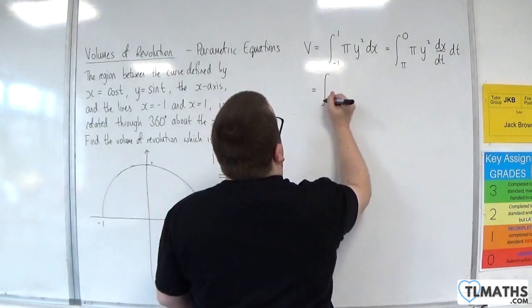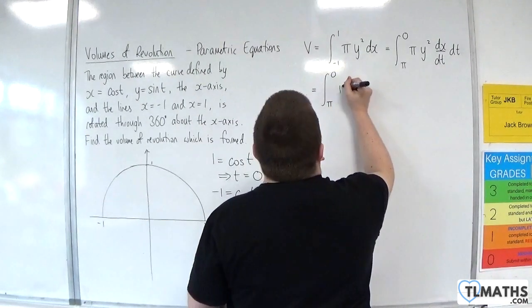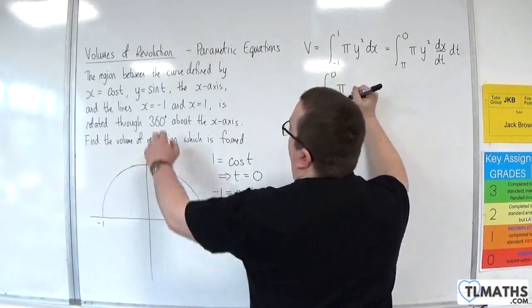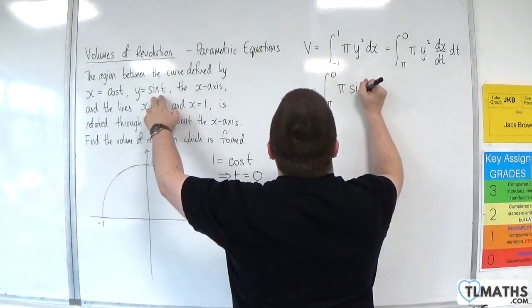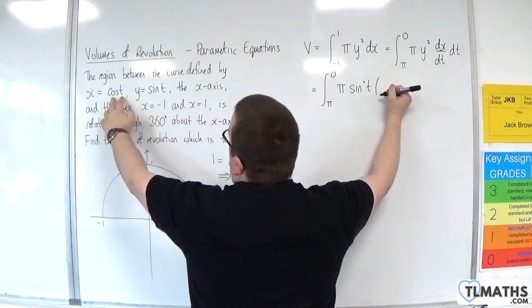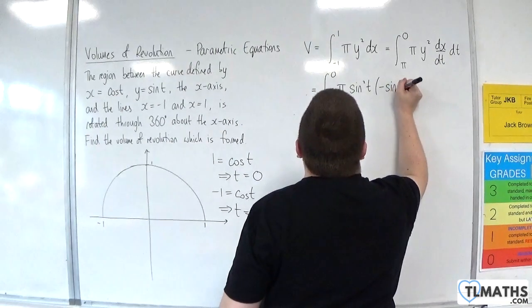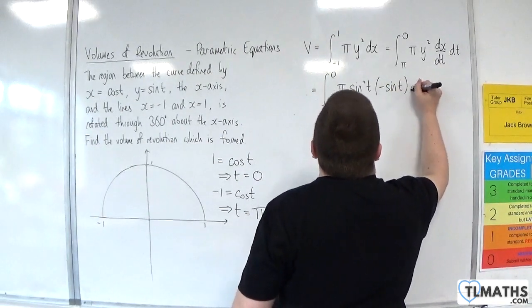So then we're going to have pi, then we're going to have y squared dx by dt dt. So we've got the integral between pi and 0 of pi times y squared, so sine squared t, times by dx by dt. Now, dx by dt would be minus sine of t, and then we've got dt.